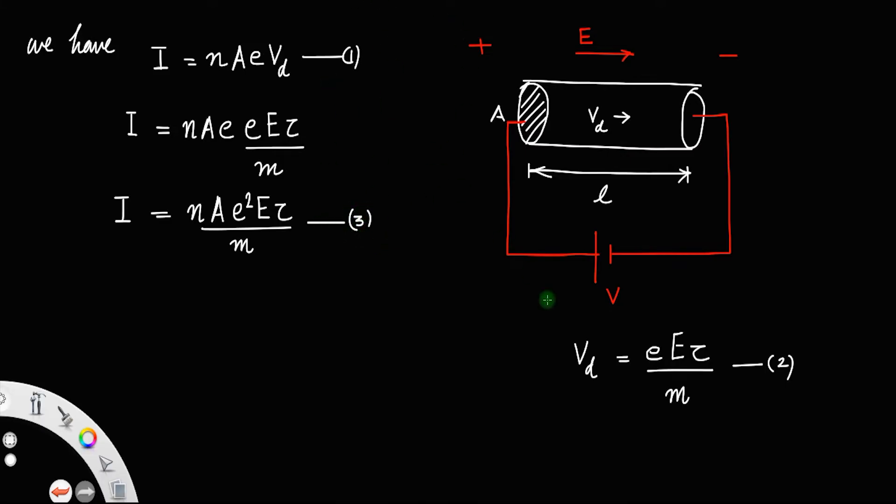But you know from Ohm's law we have V equal to IR from Ohm's law. So that I is equal to V divided by R.